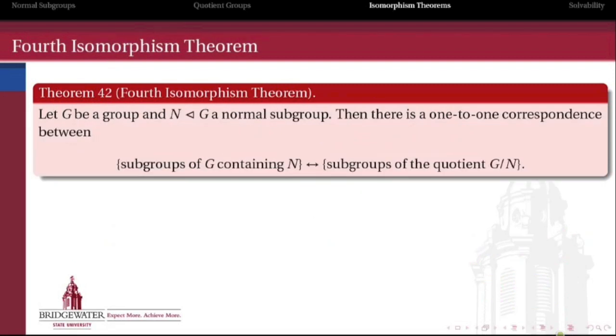So related to the first isomorphism theorem also was the fourth isomorphism theorem that we're going to use a bit later. And that shows us that there's a relationship between the subgroups of a quotient and subgroups of the original group. And it goes like this: to every subgroup of G that also contains N, we can associate a subgroup of the quotient group G mod N. What does it look like? Let's again look by way of example.